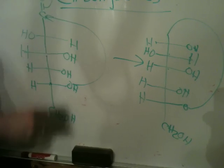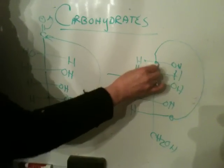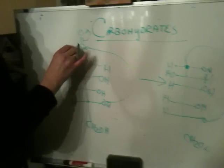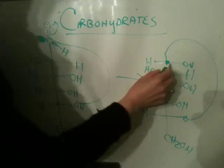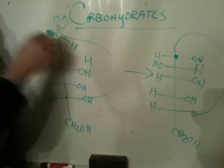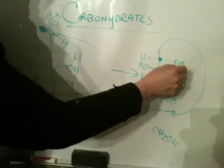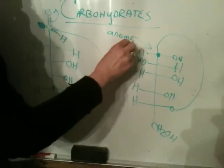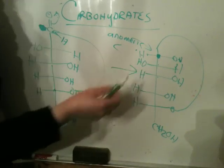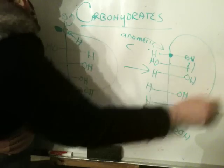Now, the enantiomer of this sugar is the complete mirror image, but the one place you have flexibility is at this carbon. This was an aldehyde — this is an aldohexose. When this attacks the carbonyl, it can attack from either side. So this OH can end up on the right or the left. This carbon is called the anomeric carbon, and you can identify an anomeric carbon because it's attached to two oxygens — this oxygen and this oxygen.